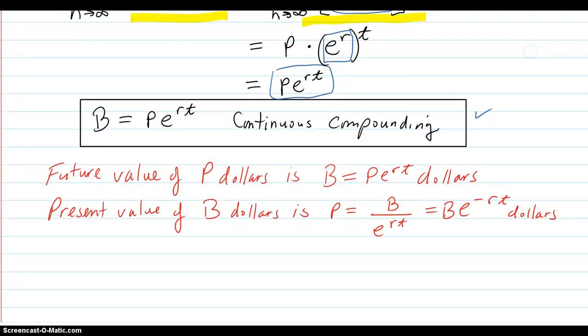And in terms of the future value. The future value of P dollars, applied now, is, here, P e to the rt dollars.